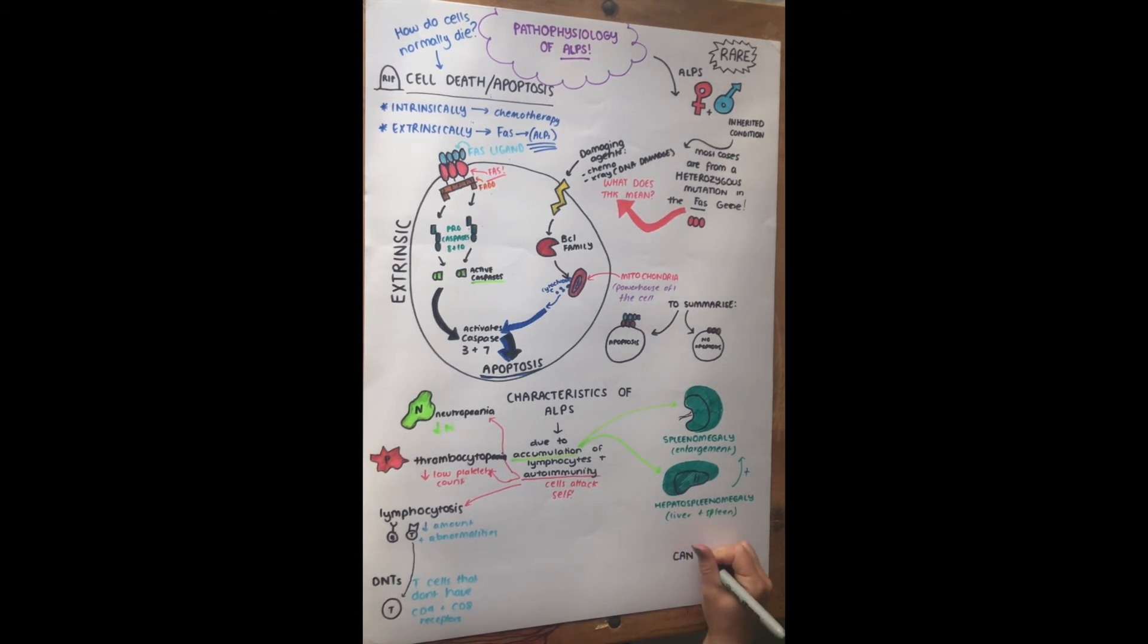So also, due to the autoimmunity and accumulation of cells, we can get cancer, and we can get non-Hodgkin's lymphoma and Hodgkin's lymphoma. That's a high risk in ALPS patients, so usually they need to have a lot of follow-ups.